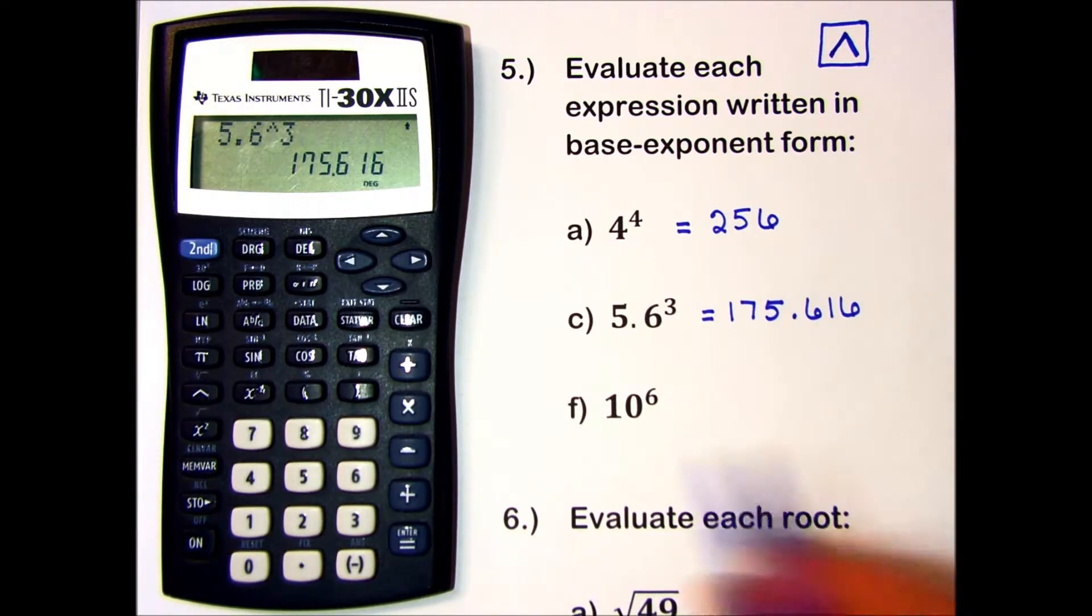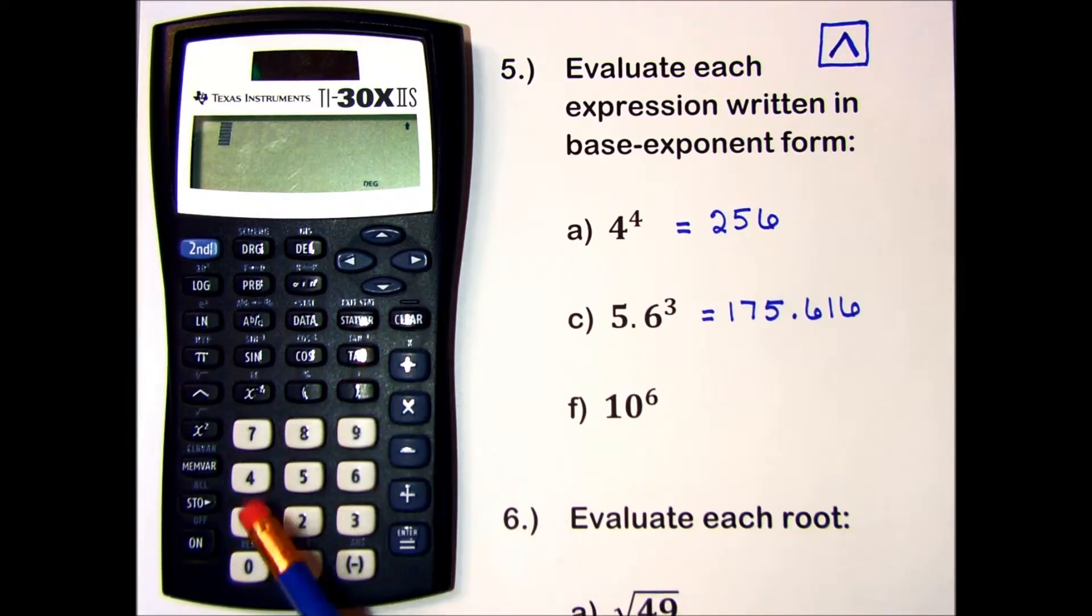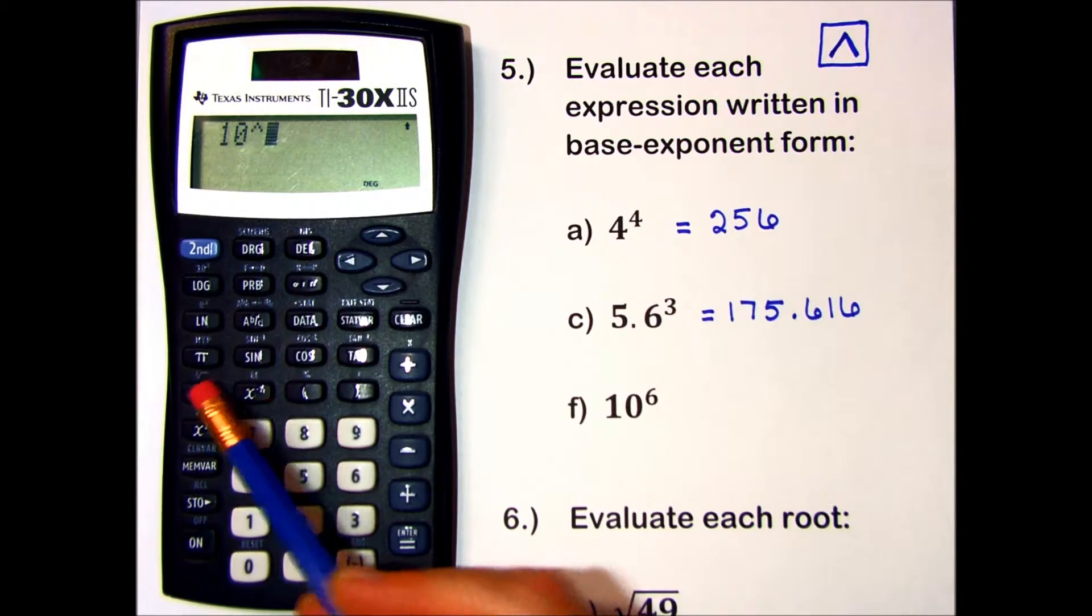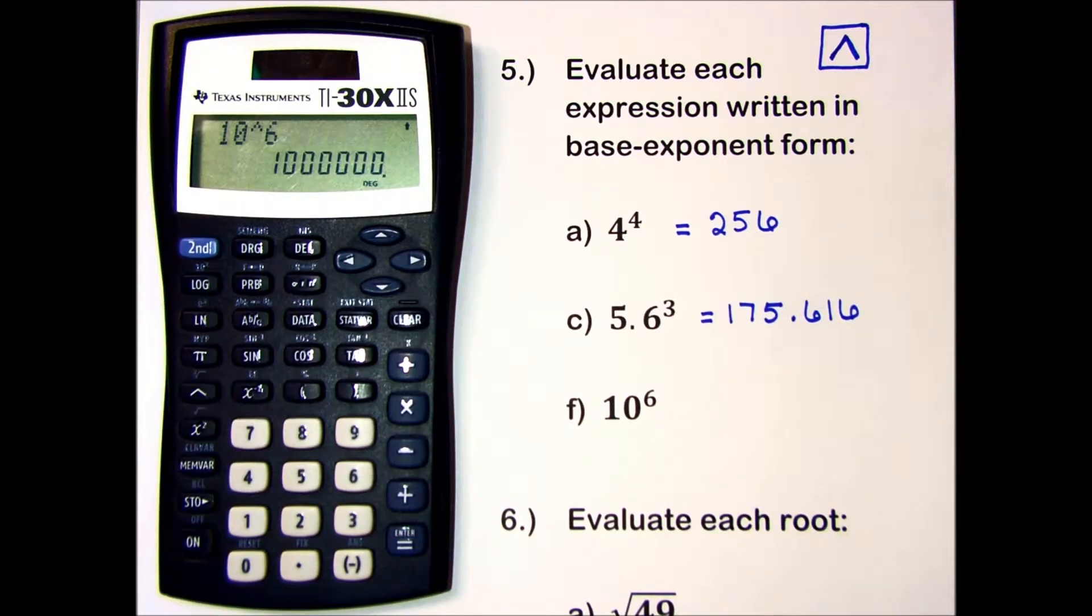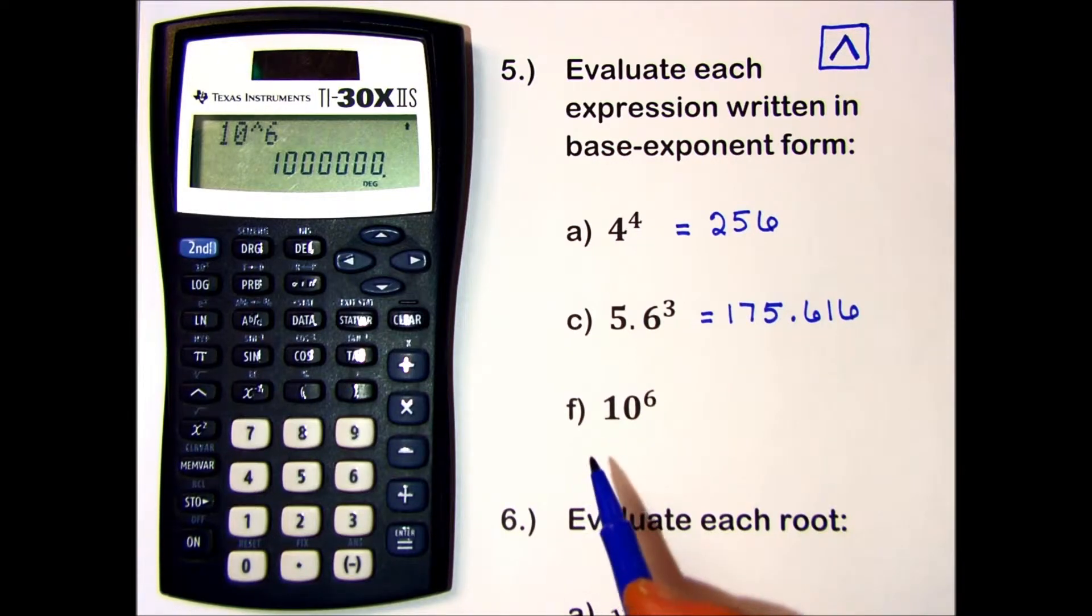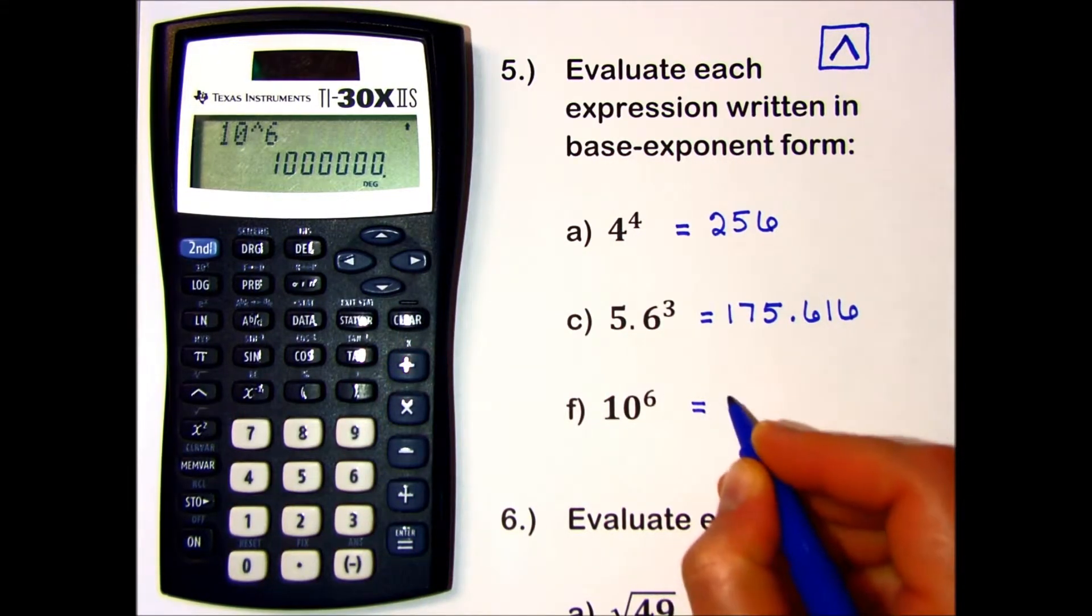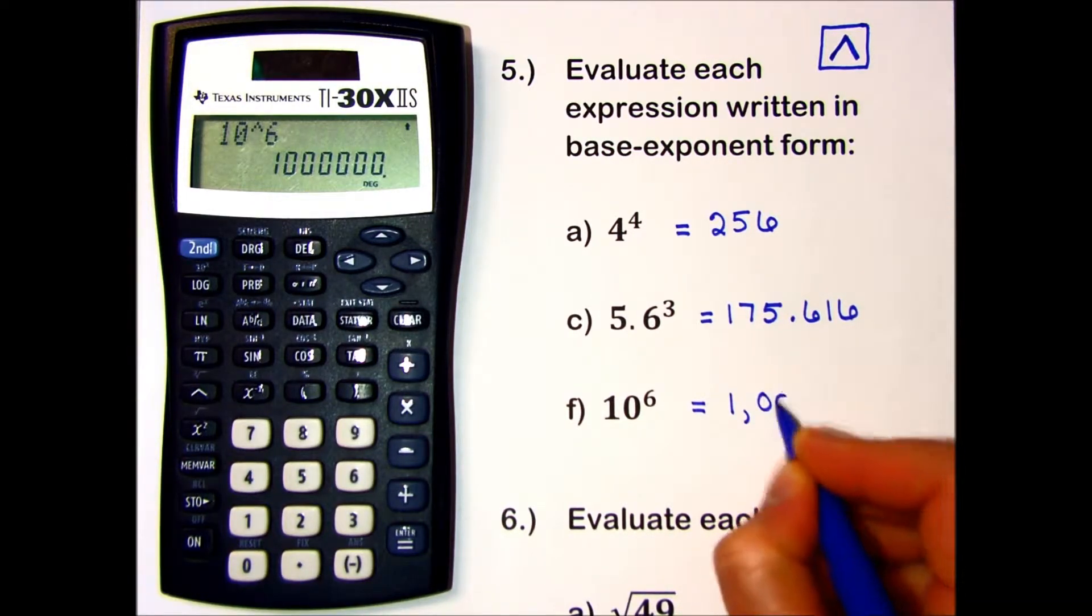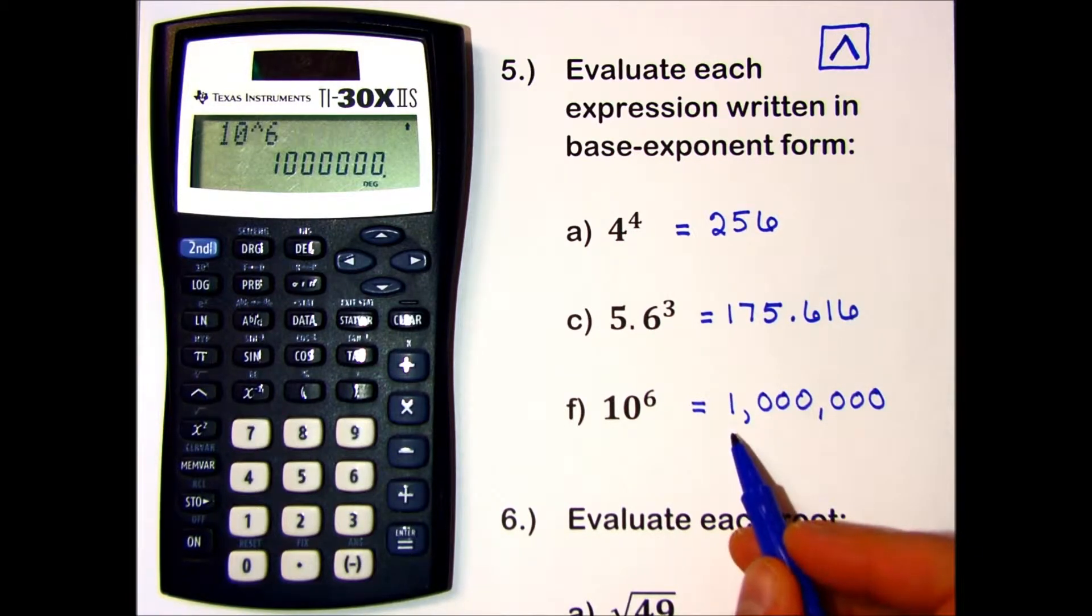And in part F, I have 10 to the 6th power. I enter 10 to the power of 6 and press equals. My answer is a 1 with 6 zeros in it. I'll write that with some commas, so it's easier to understand. That number is 1 million.